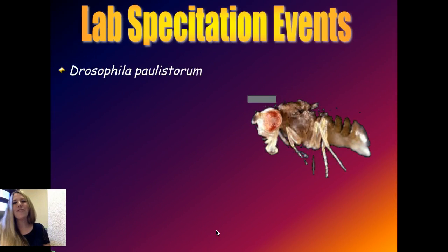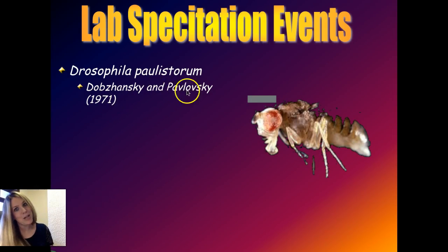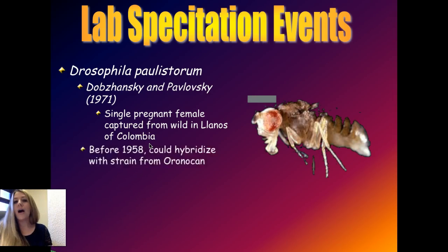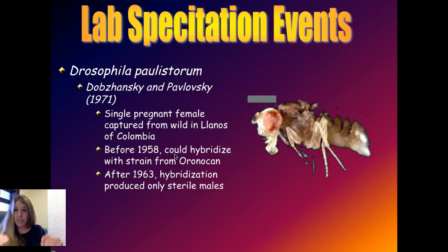We also saw this in fruit flies in the lab. So here's a species of fruit fly. This was by Dobzhansky, which we already talked about, and Pavlovsky in 1971. For these guys, they had a single pregnant female that they captured out in the field in Columbia. They let her have her babies. They started raising these babies and breeding them. And so before 1958, you could take these different cages, individuals from different cages that originated from this one mother, and they could hybridize. They did this kind of breeding in each of these cages and kept them separate for several years.